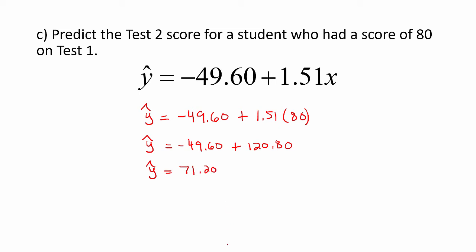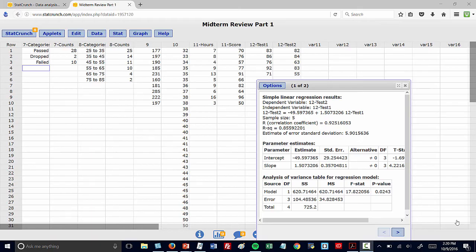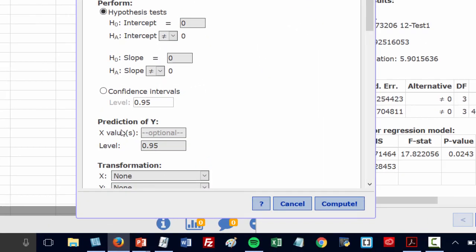Now we could also have used StatCrunch to make this prediction directly. Let's take a look at that. Now, if I want to use StatCrunch to predict a test two score associated with a test one score of 80, I can simply push options and edit. And where it says prediction of y, for the x value, I enter 80.